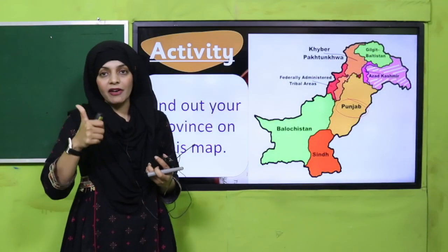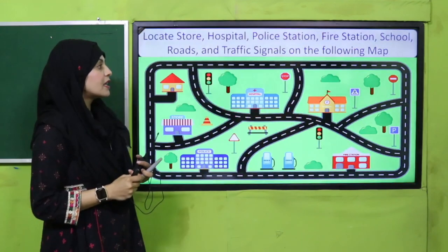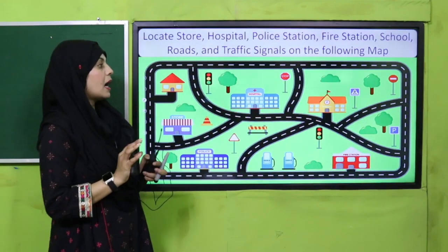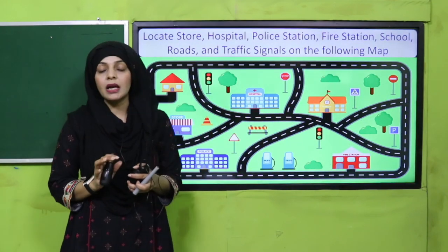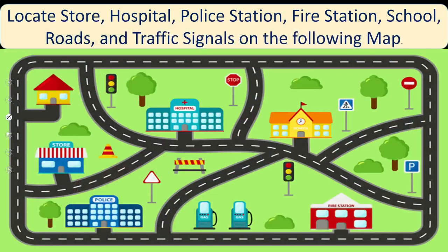I will tell you my province — my province is Punjab. I live in Punjab province. Everyone should find their province. Very good! Now, dear students, the next part: you can see a location here on the map — it is a map of a society.